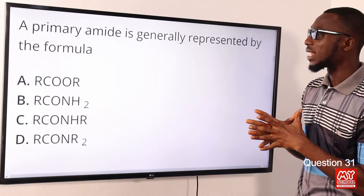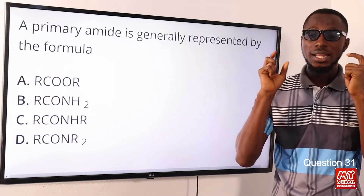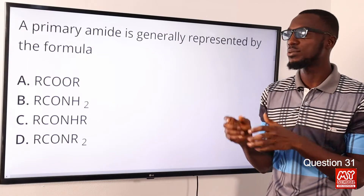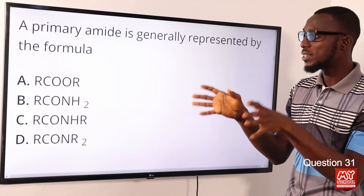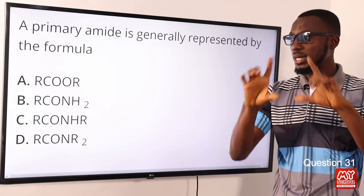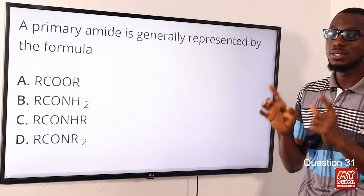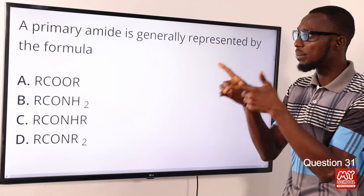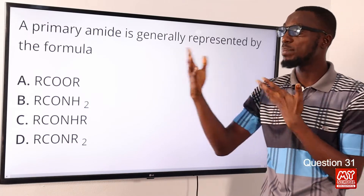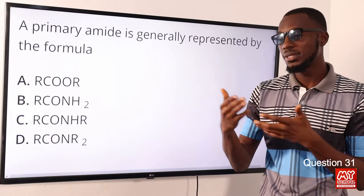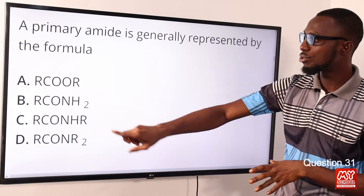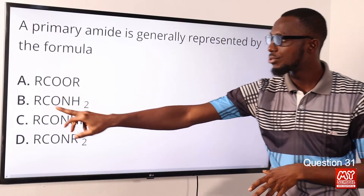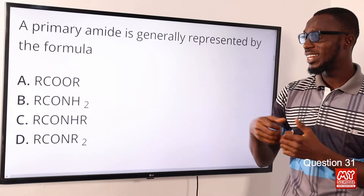Question 31: The primary amide is generally represented by the formula what? When you talk about amide, you are looking at the functional group carboxamide. Primary amide means just one carbon atom. If primary is one alkyl group, then secondary would be two. The correct option is option B: RCONH2 — the C is double-bonded to O, then we have NH2, then R. Option B is the correct option.